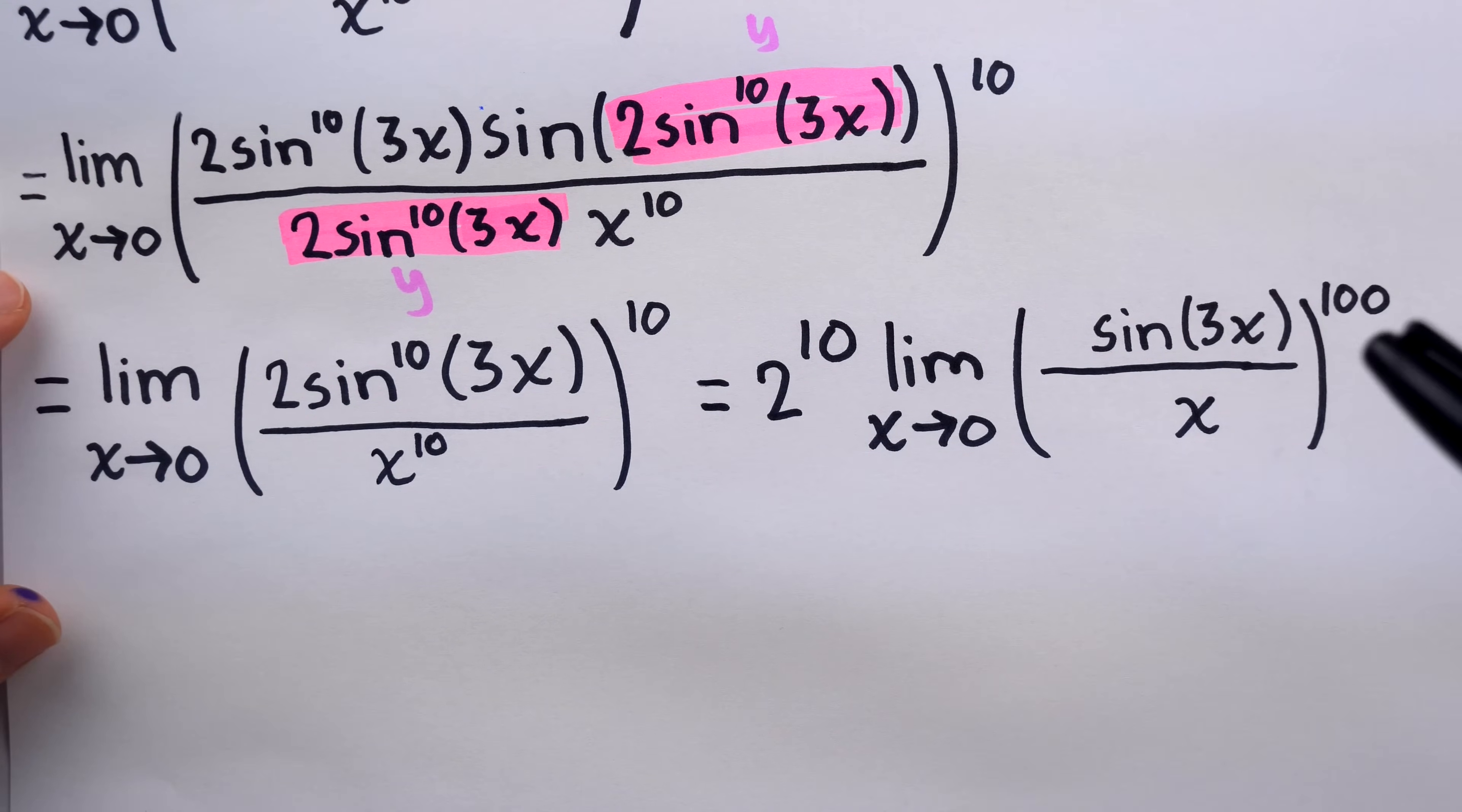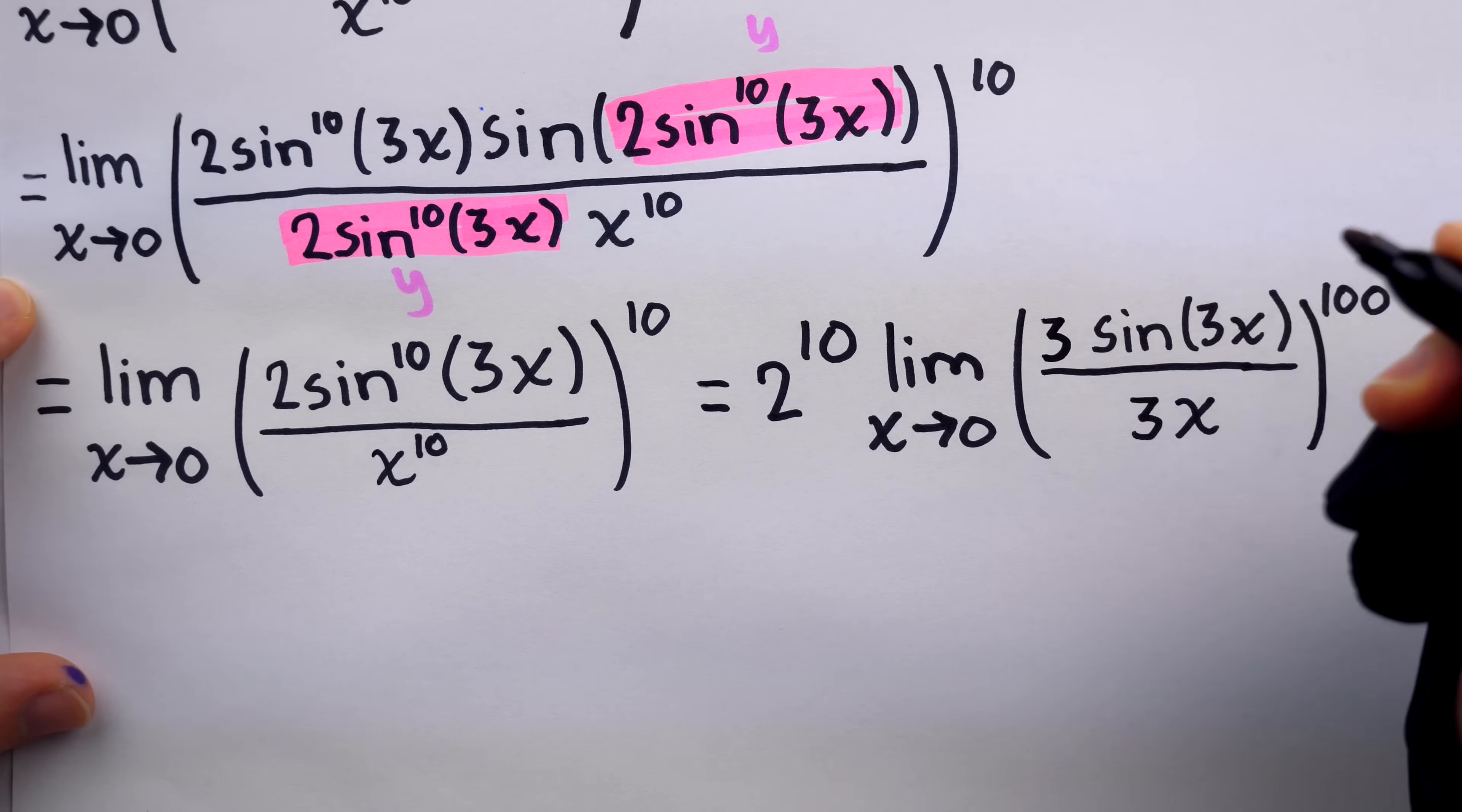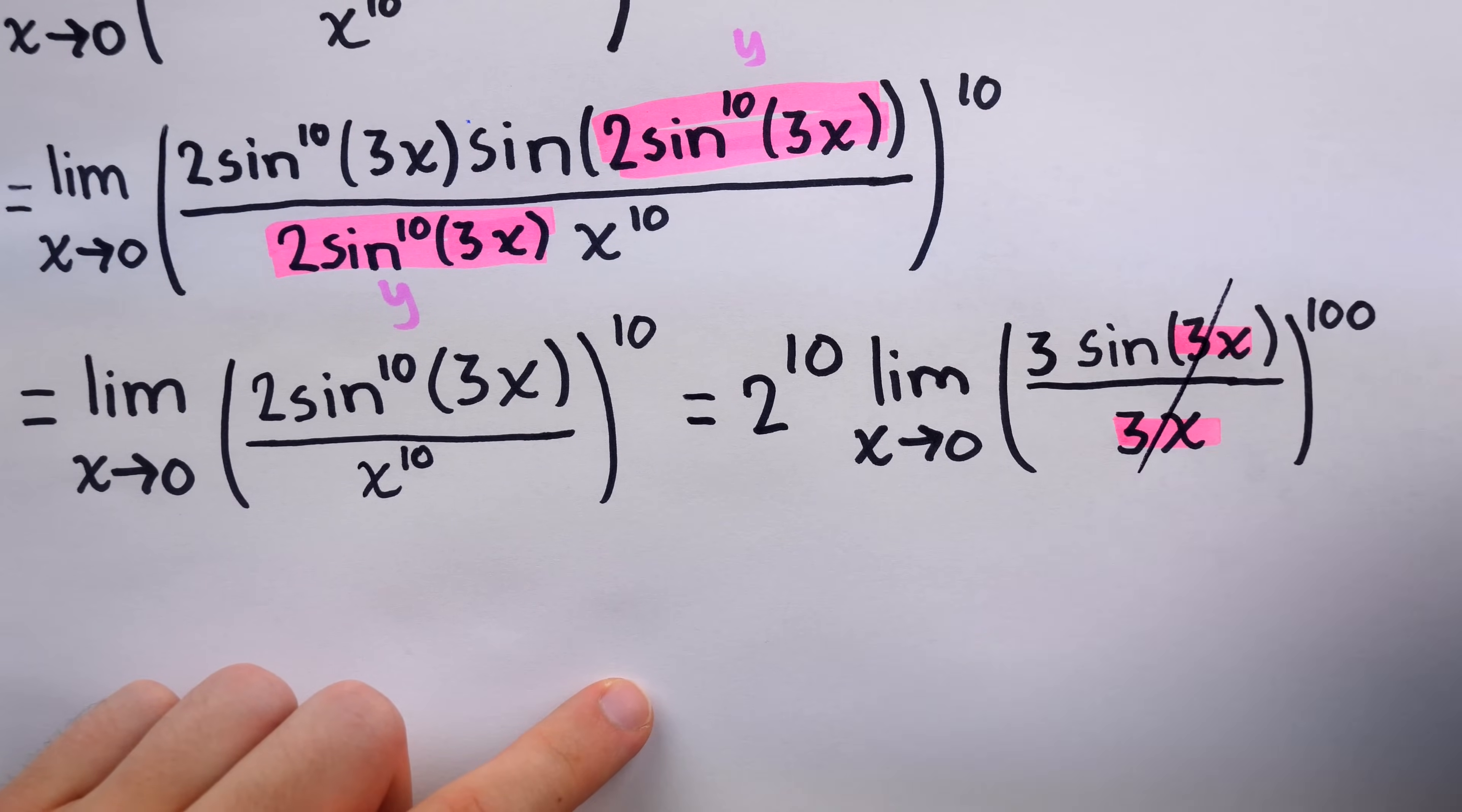And now we're back in the situation of having sine of stuff over different stuff. We'd like this in the denominator to be the same stuff. 3x here, and 1x here. How do we make this 3x? Well, just multiply it by 3. But of course, if we're going to multiply by 3 in the denominator, we also have to multiply by 3 in the numerator. So in total, we haven't changed anything. And guess what? We are done now. This is sine of 3x over 3x, and that's going to 0, because x is going to 0. Certainly, as x goes to 0, so too does 3x. So this stuff here is just 1. So in effect, it cancels out because it's 1. And then all we have is 3 to the power of 100.